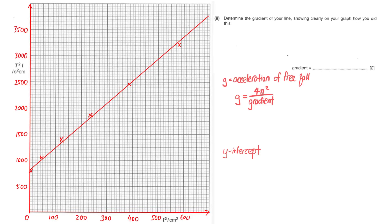In this video we're going to learn about how to find the gradient of the graph, how to use the gradient and substitute it into the equation given in the instruction, and lastly, if they ask you to find the y-intercept, how to go about doing it. I'm going to show you four examples so hopefully you can follow through and watch the whole video to have a better idea of the various kinds of graphs.